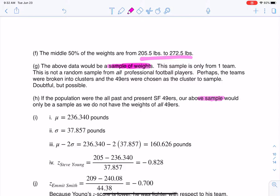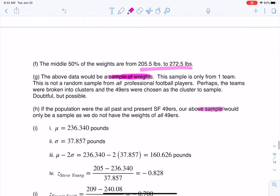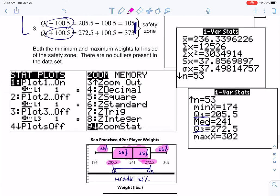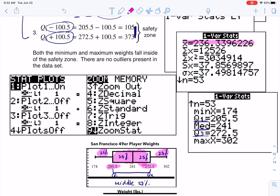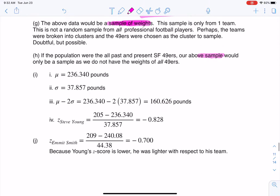When we get into part I, it says, assume the population was the current year of 49ers, find the population mean. Well, I already found it when I ran one var stats. Let me just scroll back up real quick to show you what I'm looking at. I see the mean. I see the standard deviation. So I'm going to just rip those from my one var stats. I'm going to add some units. And that's what you see me doing here. Pounds, pounds.